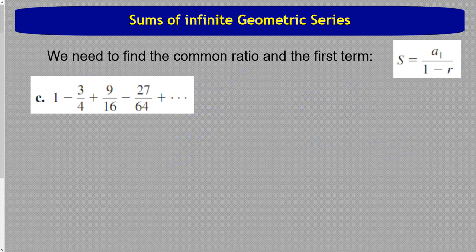Let's do the other one. This is part c. We said that r was a negative three-fourths. We can see that a sub one is one because that is the first term. So the sum is one over one minus. Notice there is a minus here. r is negative. So that is going to be one over one minus negative three-fourths.